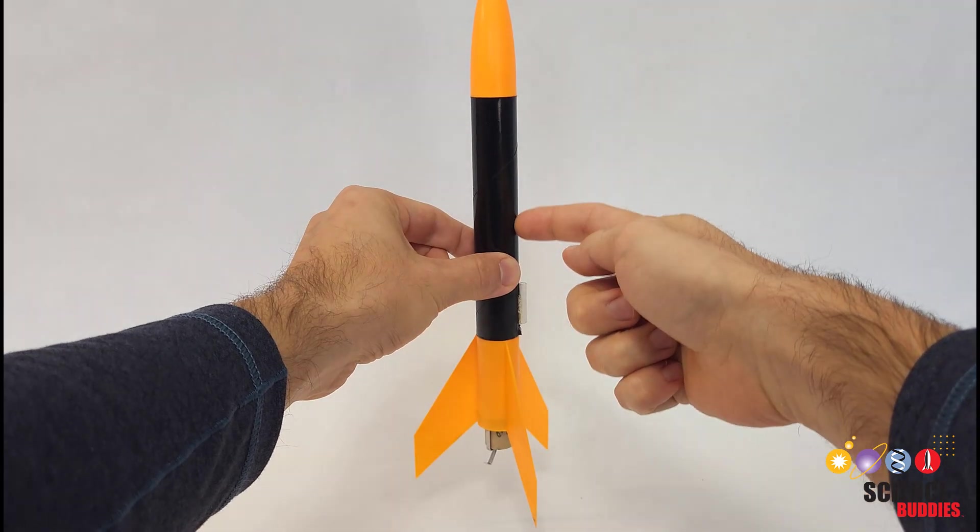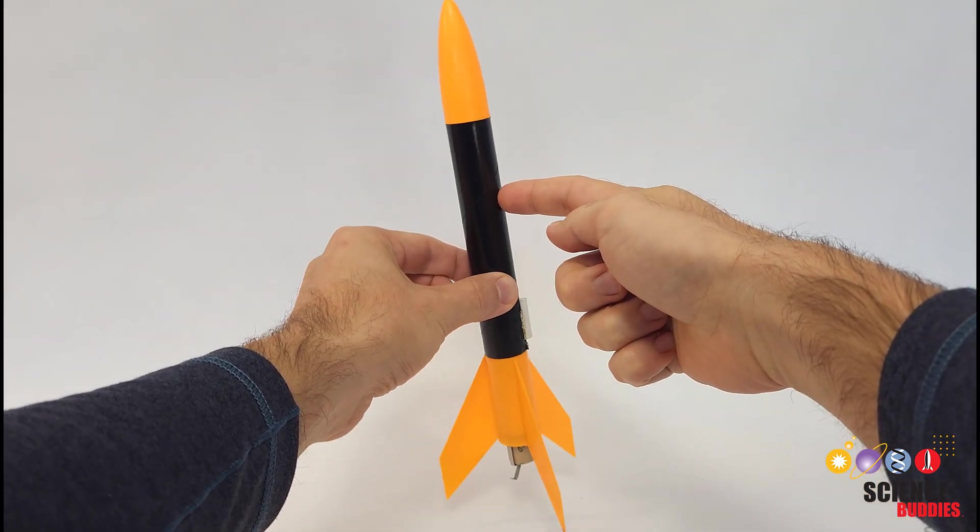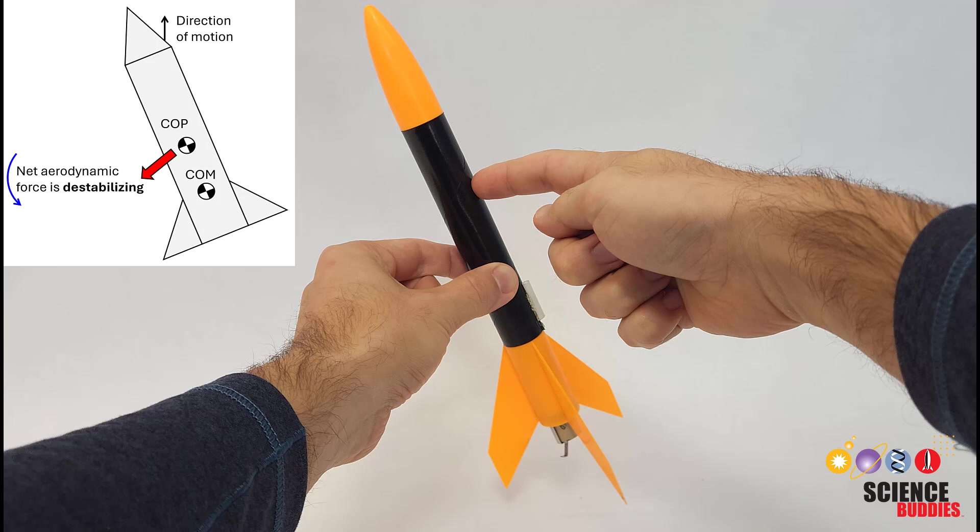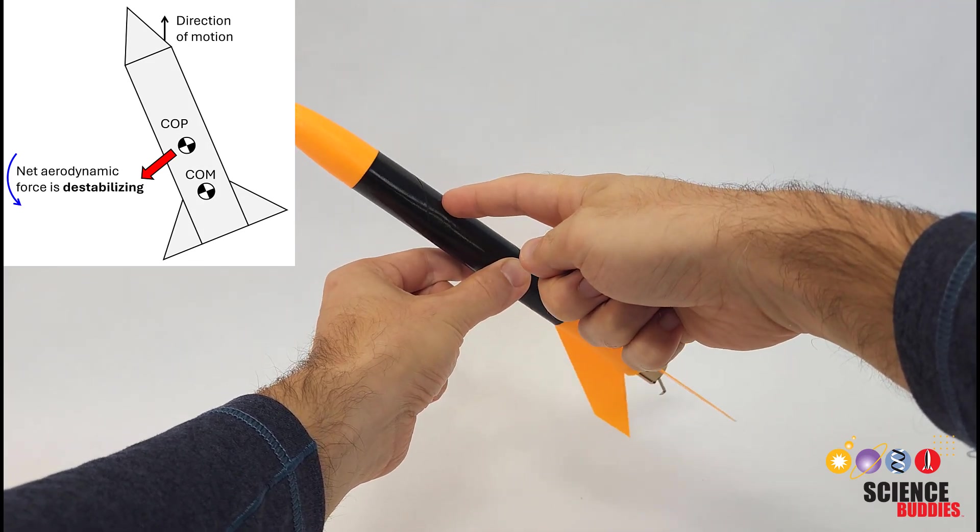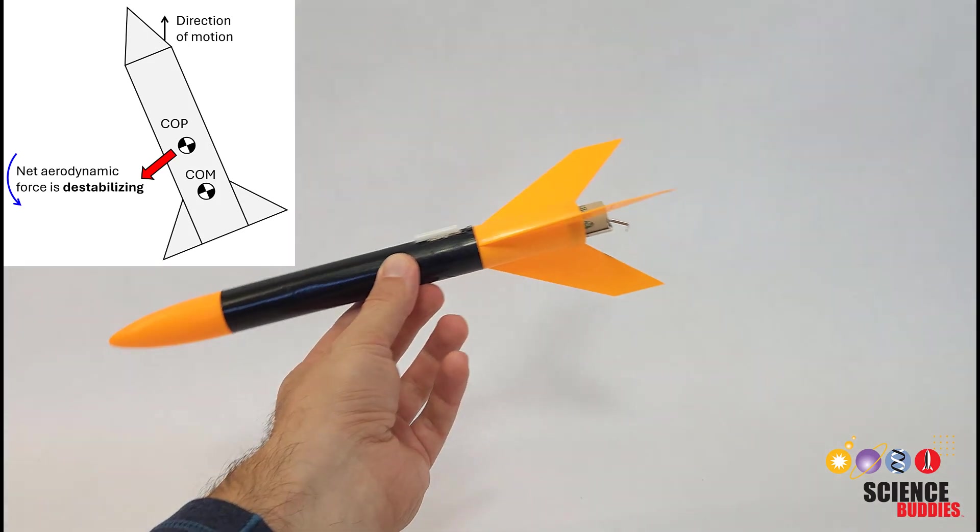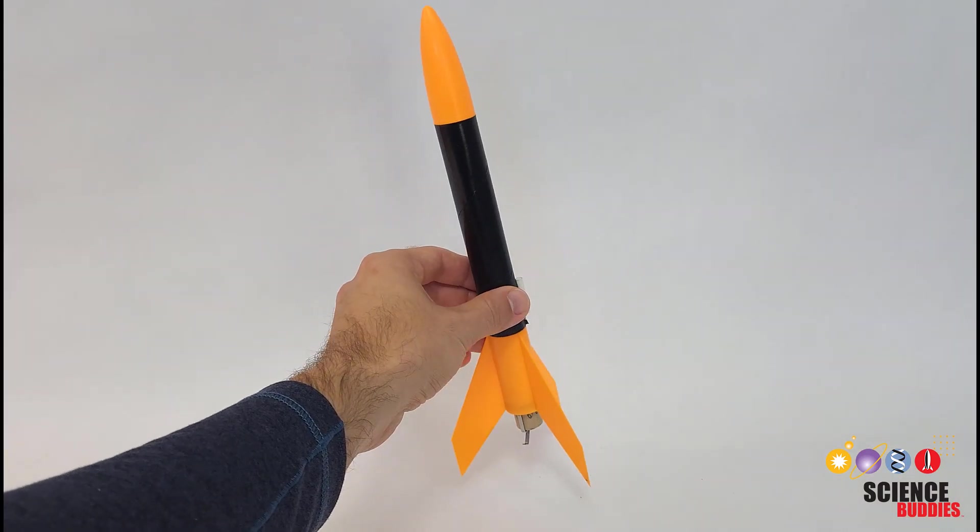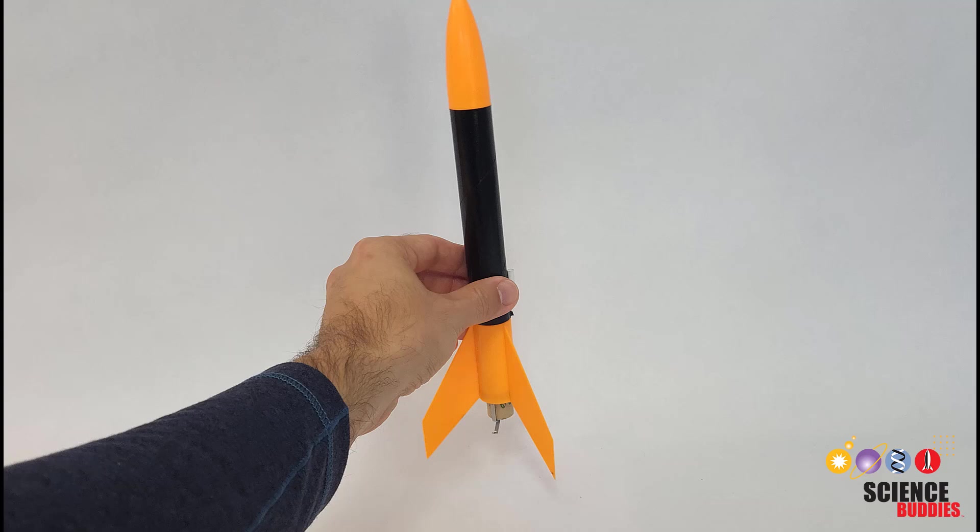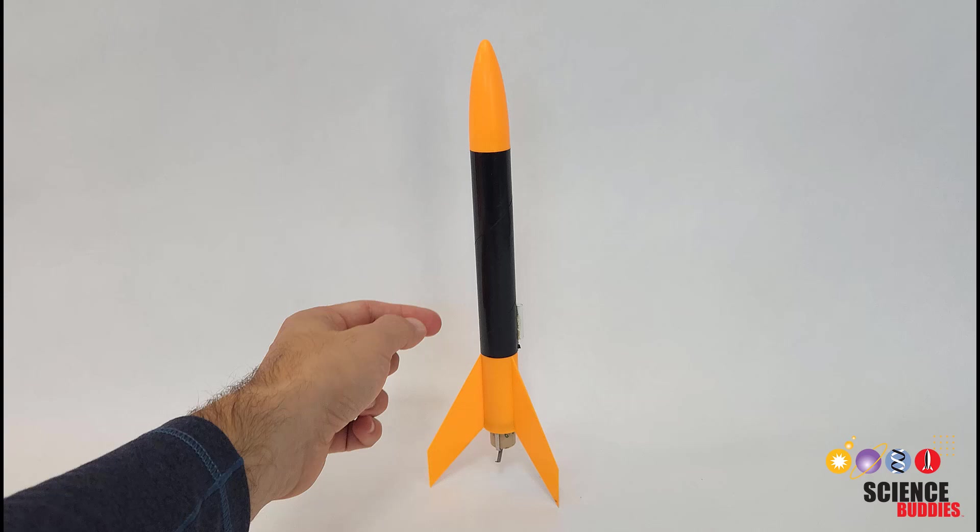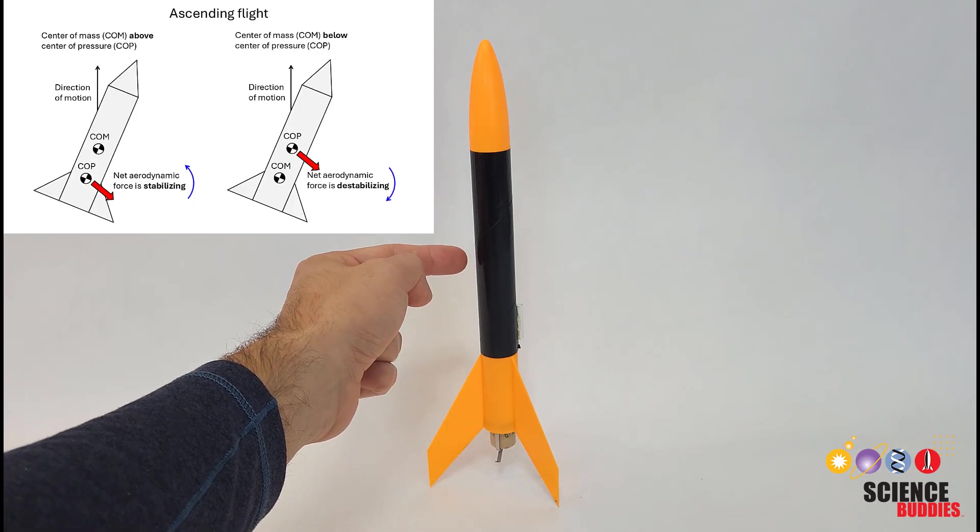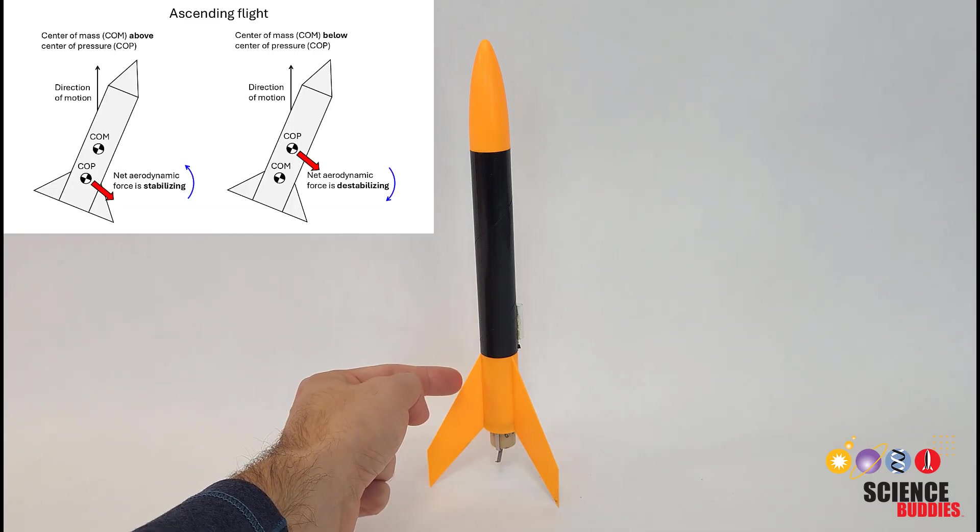If the center of pressure is in front of the center of mass, then when the rocket tilts off course, the aerodynamic forces acting on it are going to make that rotation worse and keep pushing it so it continues to rotate and crashes. So to summarize, for a vertically flying rocket to be passively stable, meaning it does not require any active control system to stay upright, the center of mass needs to be above or in front of the center of pressure.